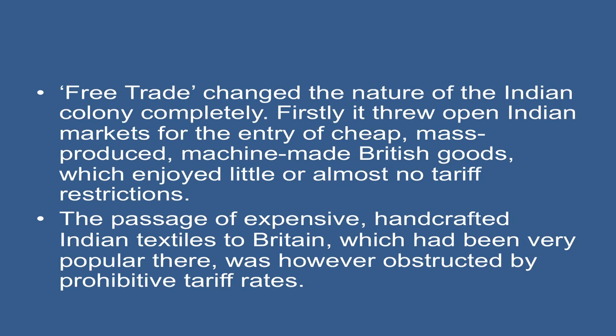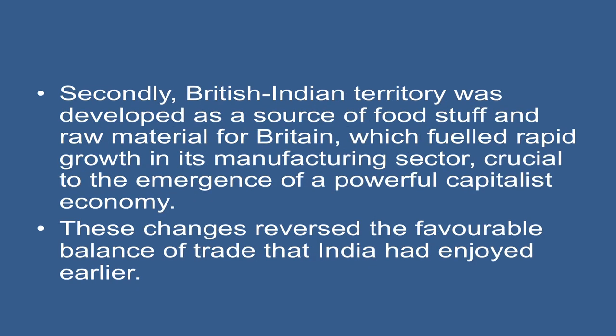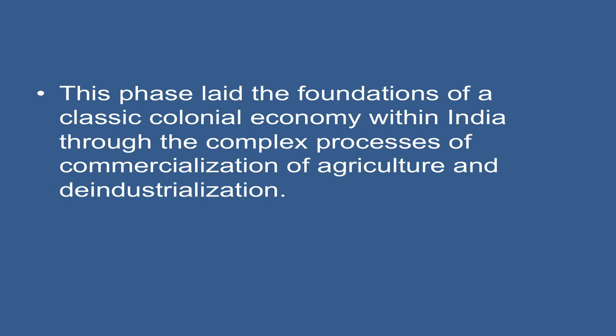Free trade changed the nature of the Indian colony completely. Firstly, it threw open Indian markets for the entry of cheap mass-produced machine-made British goods, which enjoyed little or almost no tariff restrictions. The passage of expensive handcrafted Indian textiles to Britain, which had been very popular there, was however obstructed by prohibitive tariff rates. Secondly, British Indian territory was developed as a source of foodstuff and raw material for Britain, which fueled rapid growth in its manufacturing sector, crucial to the emergence of a powerful capitalist economy. These changes reversed the favorable balance of trade that India had enjoyed earlier.